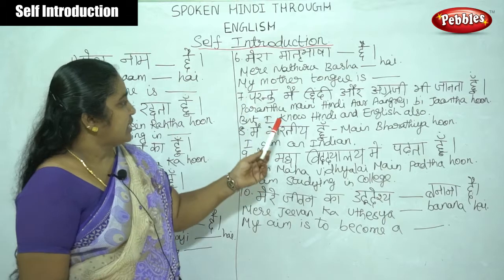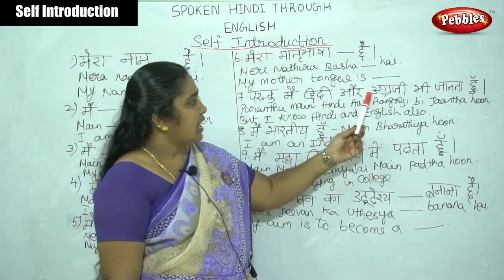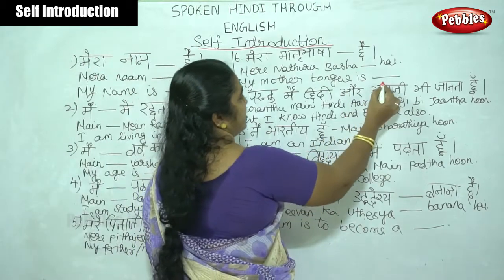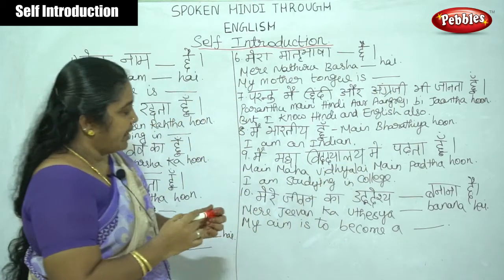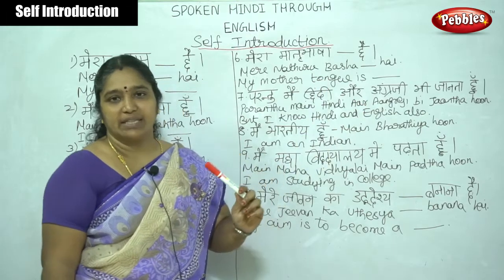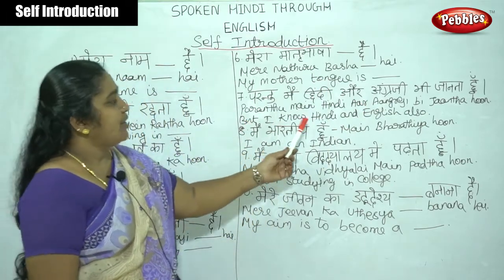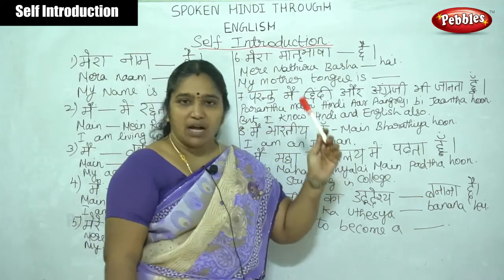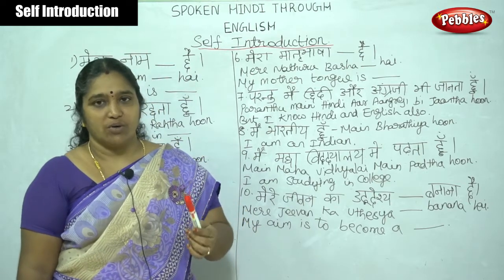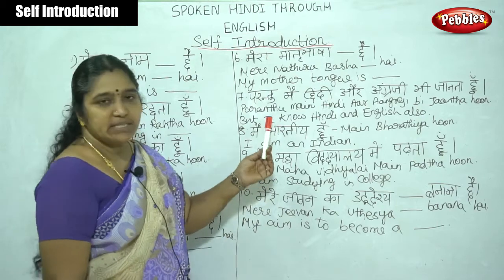Now we express ourselves about languages known. 'Parantu, mai Hindi aur Angrezi bhi jaanta hoon' — But I know Hindi and English also. We mention what languages we know and are able to speak in this self-introduction.